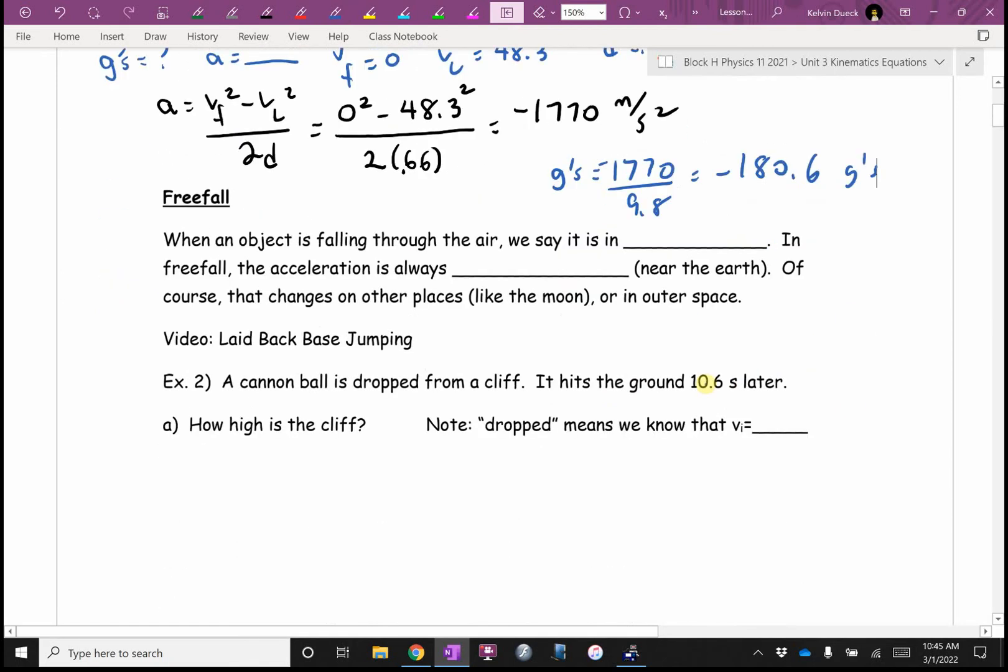Let's talk about free fall. When an object is falling through the air, we say it is in free fall. In free fall, if we ignore air resistance, the acceleration is always negative 9.8 meters per second squared. Why negative? For free fall, we're going to let down be negative and up be positive. I should point out other places, like the moon, or as you get further from the earth, that number changes. On the moon, G is about 1.6. We saw a video yesterday of them dropping a hammer and a feather on the moon, and you noticed that fell a little slower than my eyes are used to. Face jumping, put your pencil down and look up.